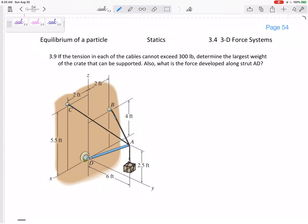Okay, one last 3D equilibrium problem. This is one of those where, hey, what's the largest weight such that none of the cables exceed 300 pounds?